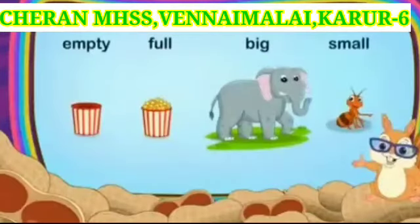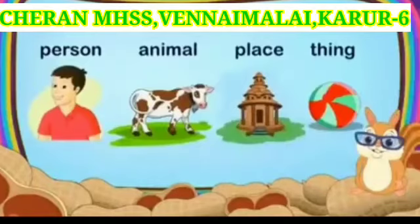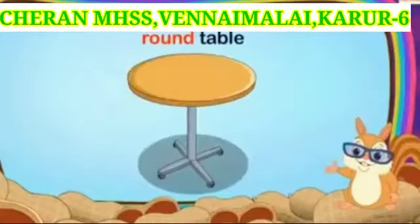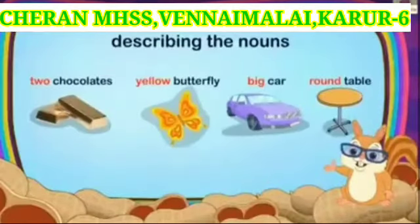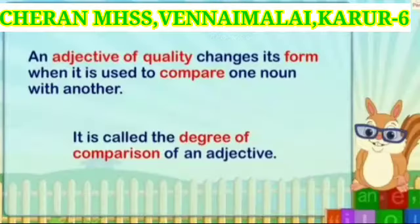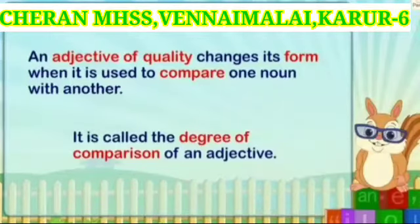Adjectives are describing words. They tell us more about a person, animal, place and things. For example: two chocolates, yellow butterfly, big car, round table. These are describing the nouns — two tells about the number of chocolates, yellow tells about the color of the butterfly, big tells about the size of the car, round tells about the shape of the table. Adjectives mostly come before the noun. An adjective of quality changes its form when it is used to compare one noun with another. It is called the degrees of comparison of an adjective.